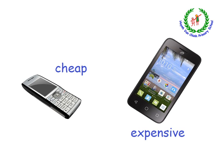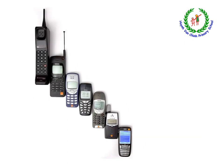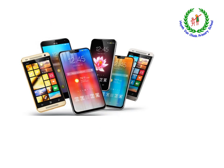Here we see two mobile phone models. One model is described with the adjective 'cheap', meaning inexpensive. The other model is described with the adjective 'expensive', meaning costly. Comparing an old phone with a 9-button keypad and black-and-white screen to modern smartphones, the new ones are 'modern' — meaning hiện đại — with many different features.